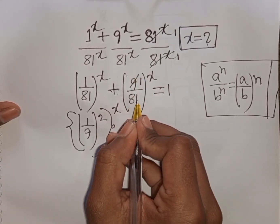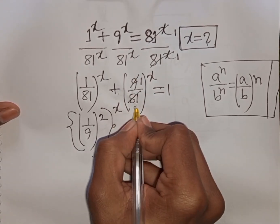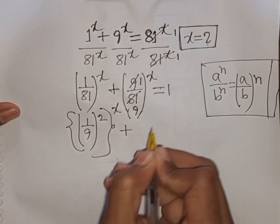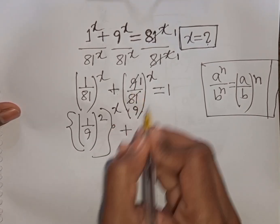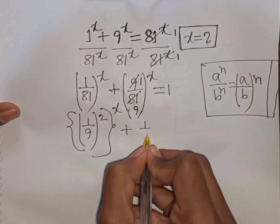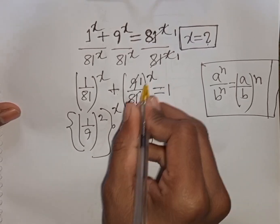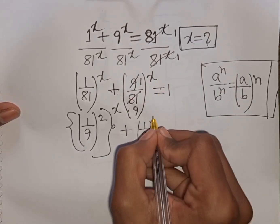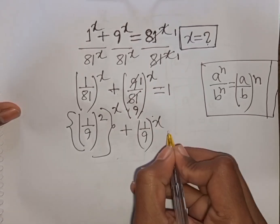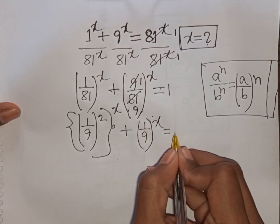And 9 divided by 9 equals 1, and 81 divided by 9 equals 9. So we have (1/9)^x equal to 1.